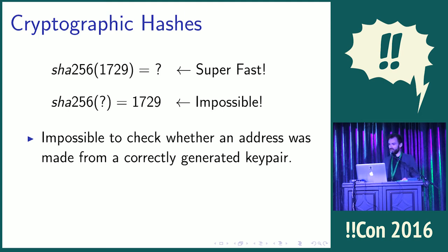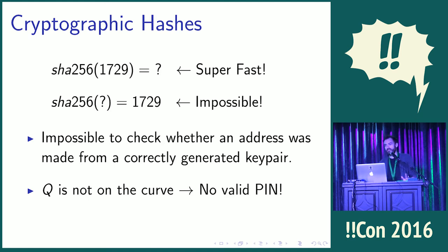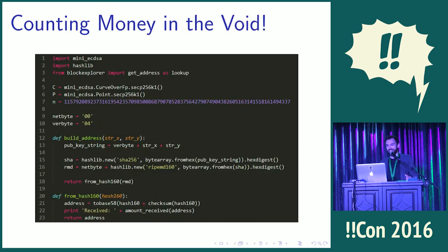That has a very strange consequence: if I just see an address, I can't get the public key back. So I can't check whether the point I used to make the address is actually a point on the elliptic curve — I could have chosen any point in the world and made an address. If you make an address from a point that's not on the curve, you're creating an account, but the account has no PIN number. So I can send money into an account that nobody will ever be able to spend from. The money will still go there — you're basically throwing money into a big black hole.